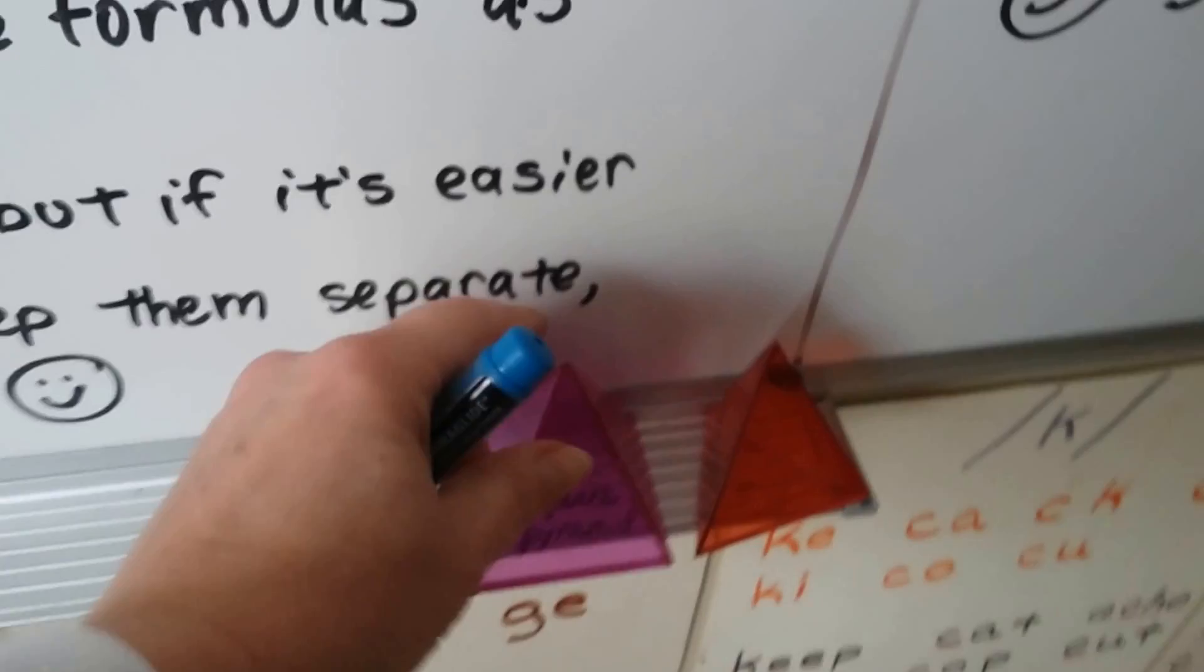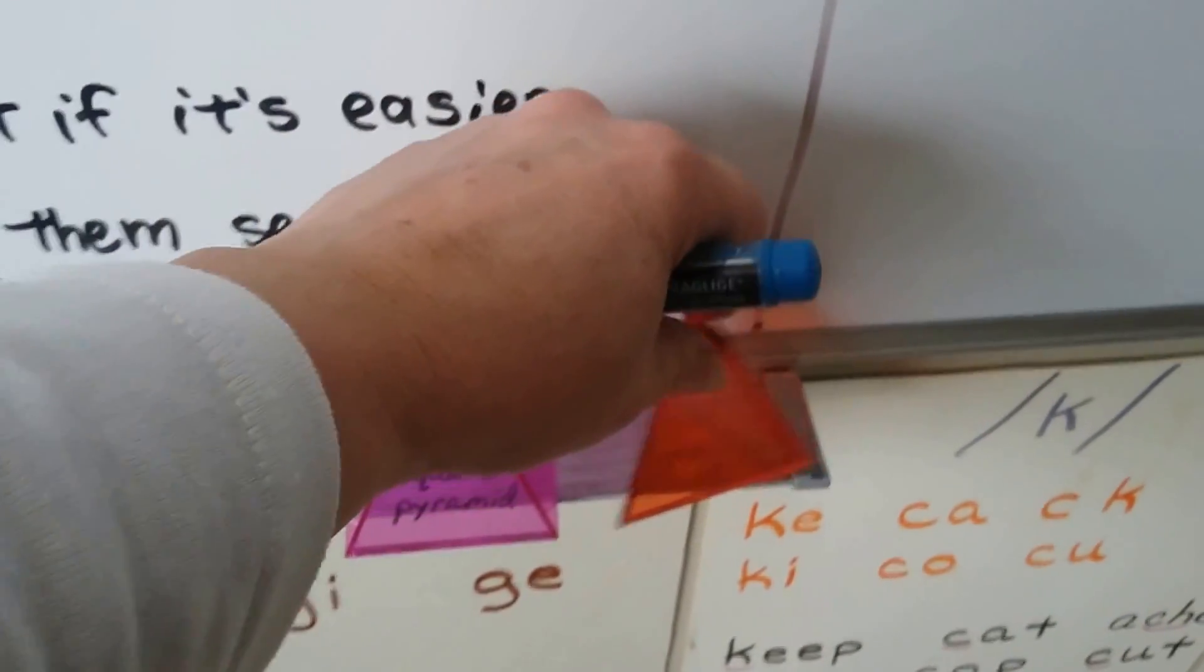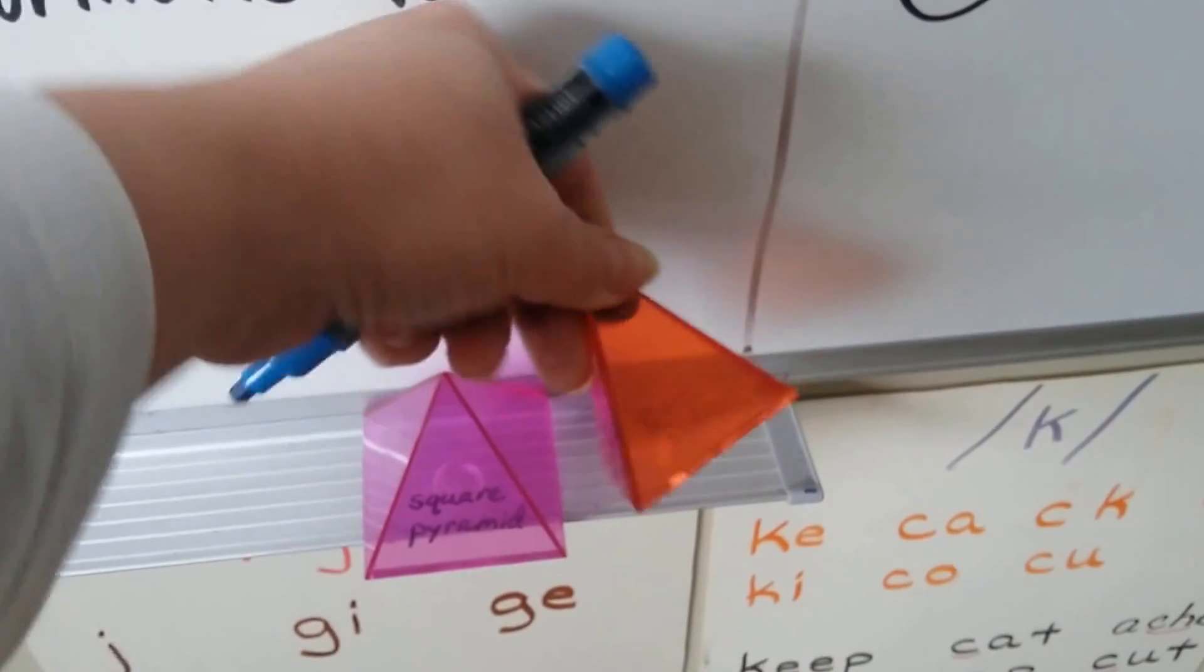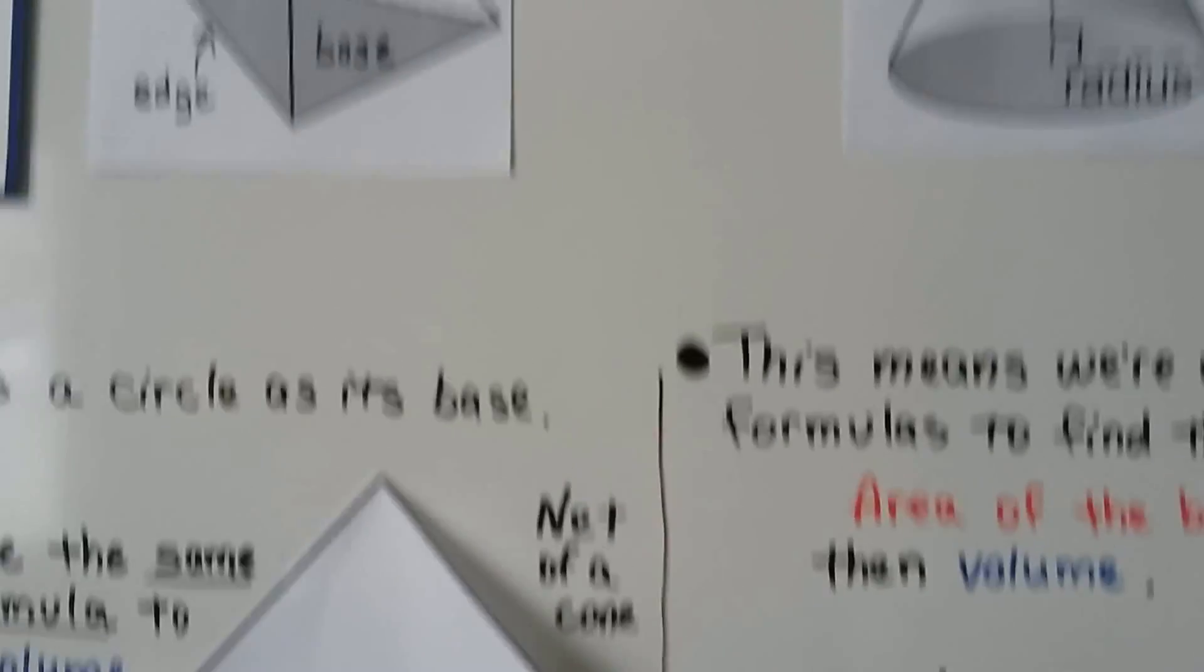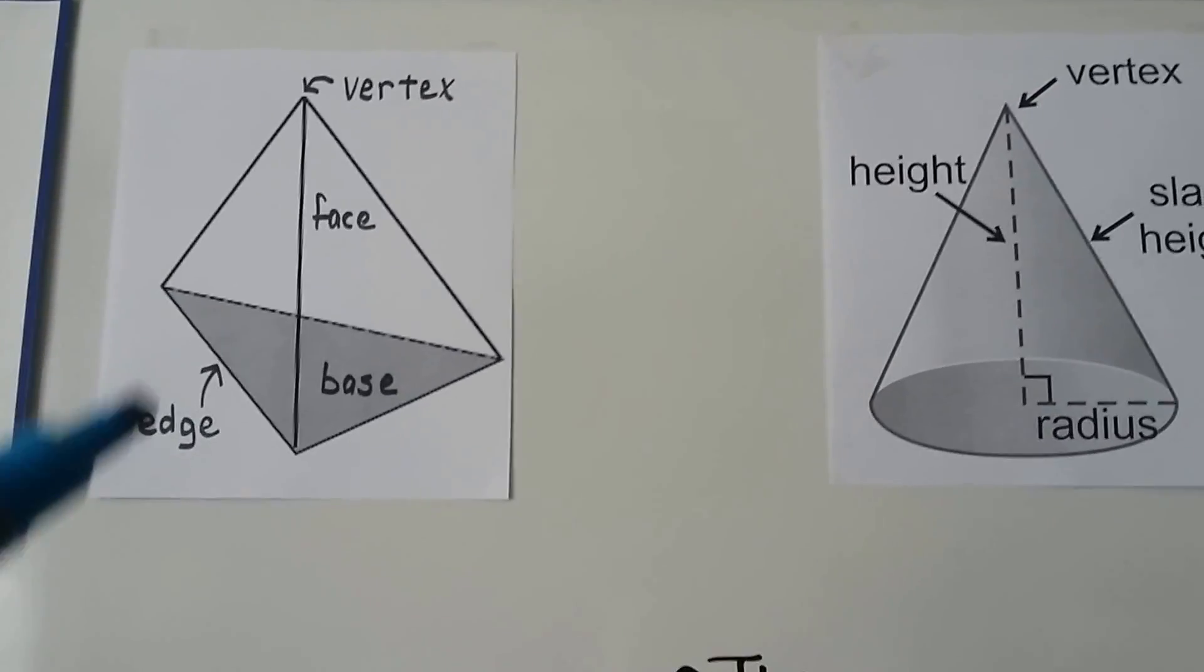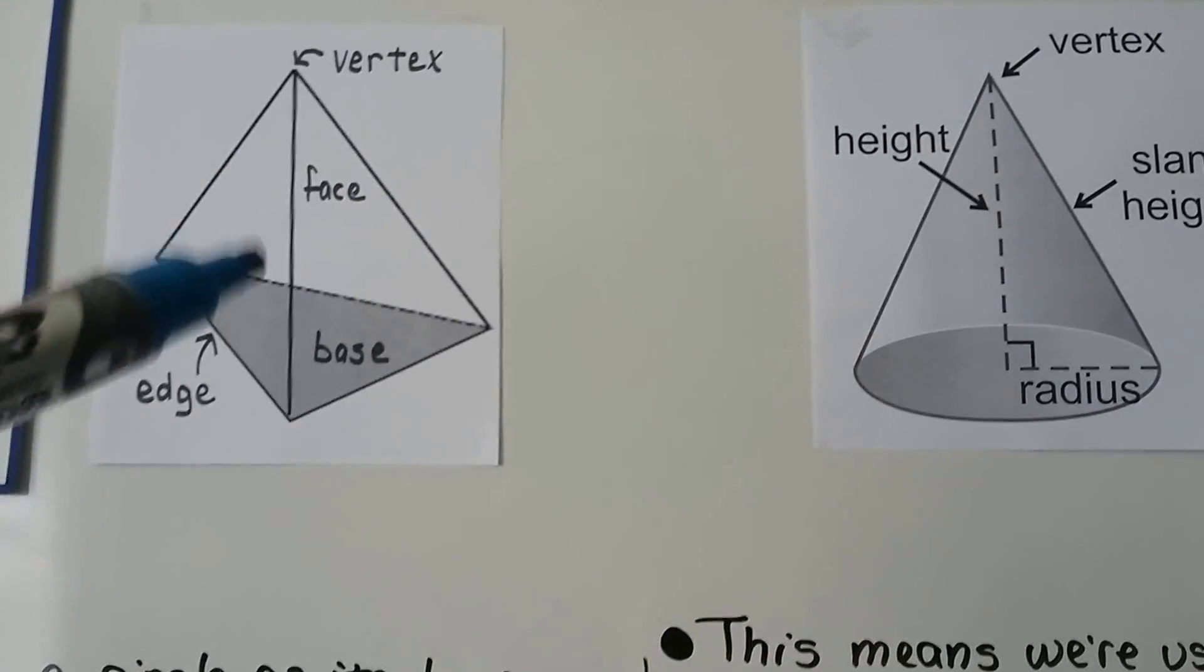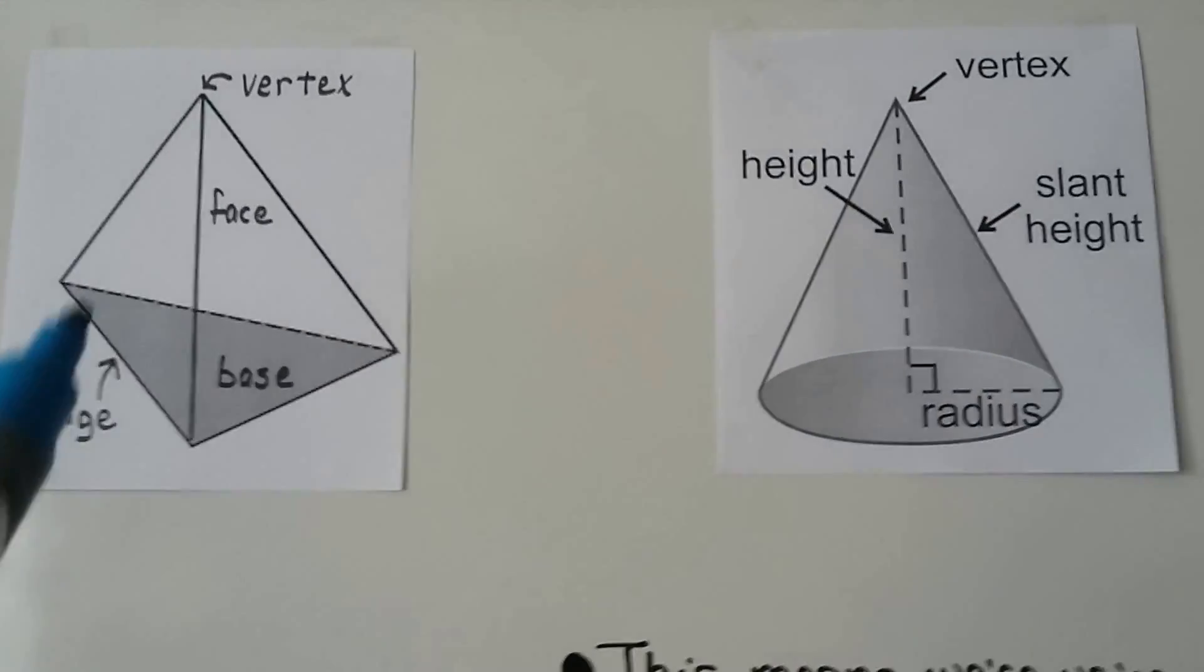Here's a square pyramid. It's got a square base. Here's a triangular pyramid. It's got a triangle base. And at the very, very top, they've got a vertex, the pointy part on top. This is an edge. These are the faces. There's a face in the back. You can see the base.